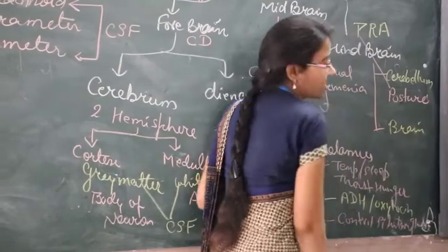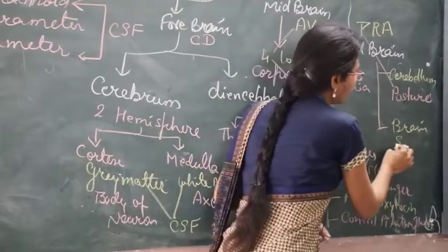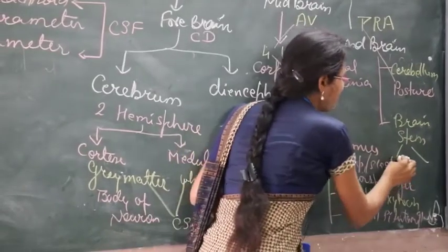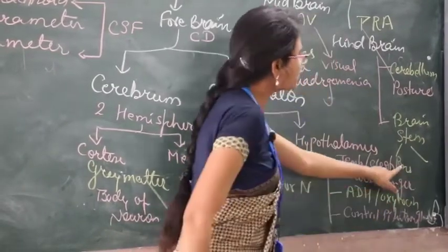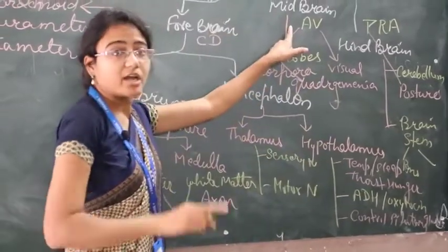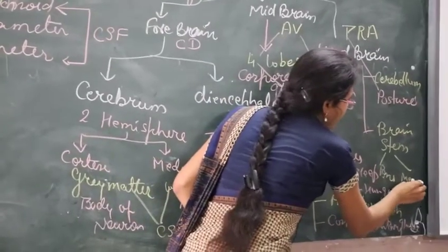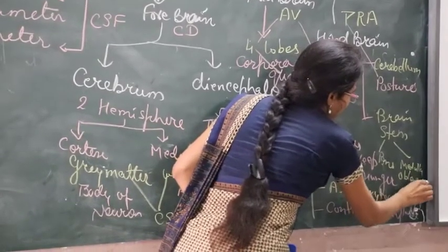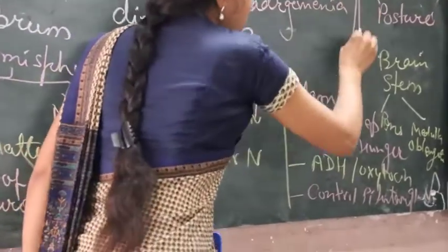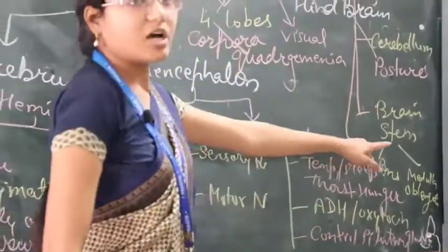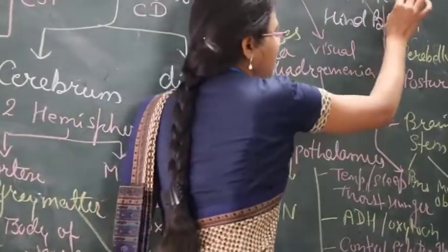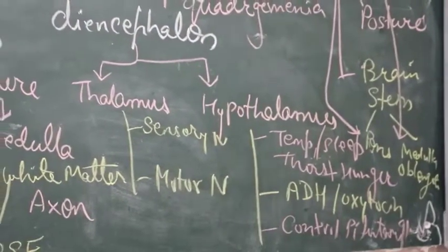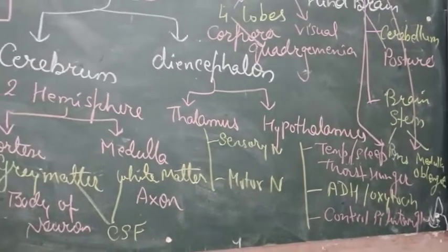The next part is the brain stem. The brain stem consists of two parts: pons, which is situated between the midbrain and the last part of the brain — the medulla oblongata. The pons is related to respiration, and the medulla oblongata is related to all sudden jerks and reflex actions, such as vomiting and sneezing.